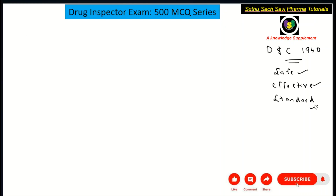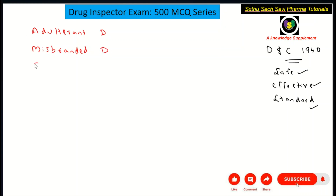Now you need to remember three terminologies: one is the adulterant drug, the second term is misbranded drug, and the third term is spurious drug.